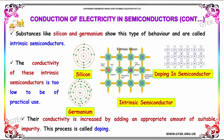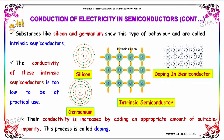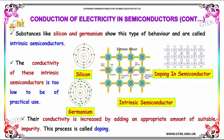Substances like silicon and germanium show this type of behavior — they are called intrinsic semiconductors. The conductivity of these intrinsic semiconductors is too low to be of practical use. Their conductivity is increased by adding an appropriate amount of suitable impurity. The adding of impurity to a semiconductor is called doping.